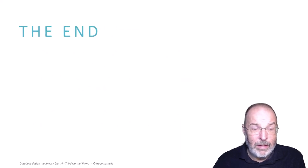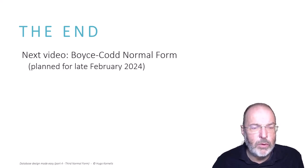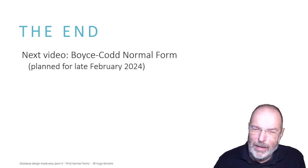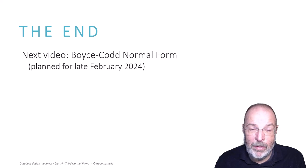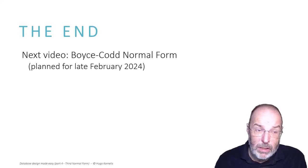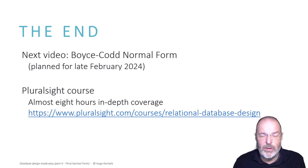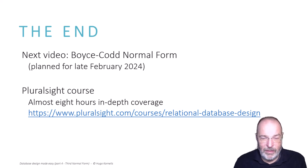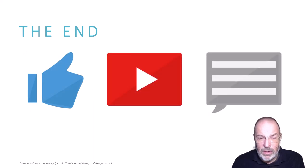That was third normal form. In the next video, which I hope to release at the end of February 2024, I am going to talk about Boyce-Codd normal form. You might have expected fourth normal form, but that will be later — first I need to explain Boyce-Codd normal form. As always, if you don't want to wait that long, feel free to check out my Pluralsight course, which is almost 8 hours long and provides in-depth coverage, including a method to find all functional dependencies in a very structured way. Please like, subscribe, and comment. Thanks for watching. My name is Hugo Caneres. Goodbye.